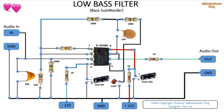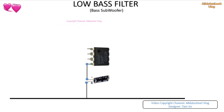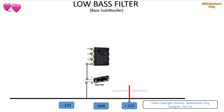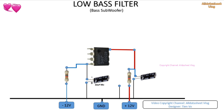Welcome to the channel, All Data Sheet Vlog. In this video, I will show you a low pass filter circuit using IC 4558, making a subwoofer preamplifier. Subwoofers are designed primarily to reproduce low frequency sounds such as deep bass. However, audio signals from a variety of musical sources including recordings and live performances often contain both low and high frequency components.